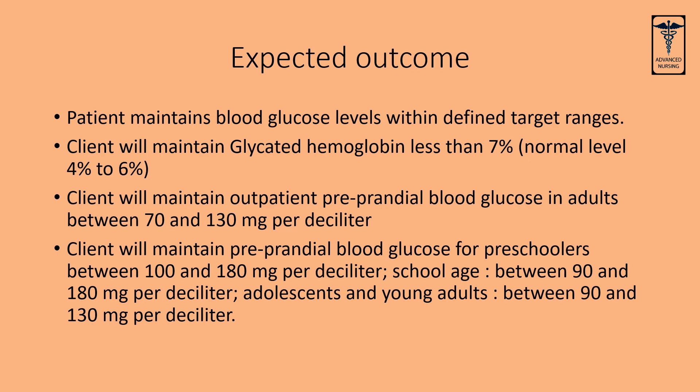Client will maintain preprandial blood glucose for preschoolers between 100 and 180 mg per deciliter, school age between 90 and 180 mg per deciliter, and adolescents and young adults between 90 and 130 mg per deciliter.